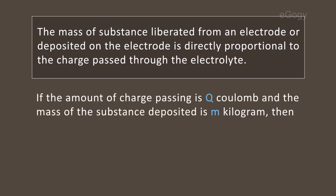If the amount of charge passing is Q coulomb and the mass of the substance deposited is M kilogram, then M is directly proportional to Q, so M equals a constant times Q.